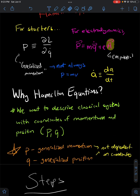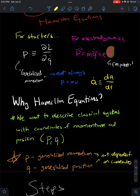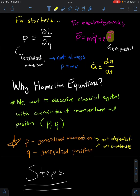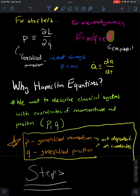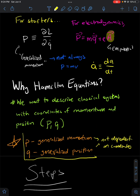We treat p and q as independent variables. This is an important aspect of classical mechanics — p and q will not depend on each other generally. Also, our notation here is that a dot on top of a variable is just notation for the first derivative of that variable. If a variable has two dots, that means the second derivative.